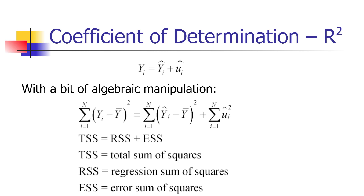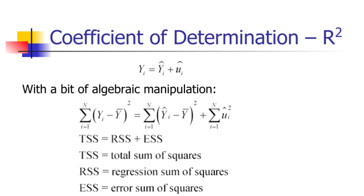Depending on what stats book you may have used, you may have seen ESS and RSS reversed. Unfortunately, there is no consensus among introductory stats books on the notation here. We're going to use RSS to denote the regression sum of squares, though some textbooks use this to denote the residual sum of squares. We're going to use ESS to denote the error sum of squares, though some textbooks use ESS to denote the explained sum of squares. In this course, we will always use RSS for the regression sum of squares — the amount that's explained — while ESS represents the unexplained or error sum of squares. It doesn't matter which notation you use as long as you use it consistently.